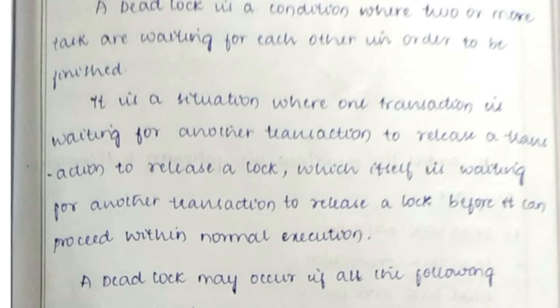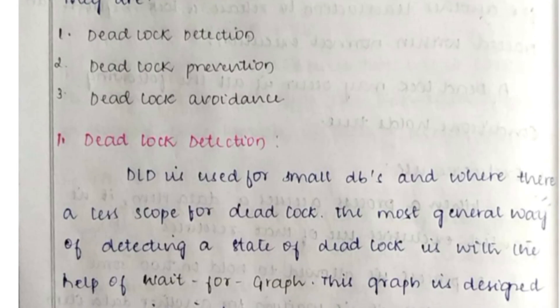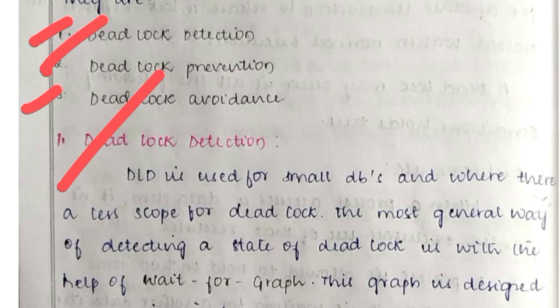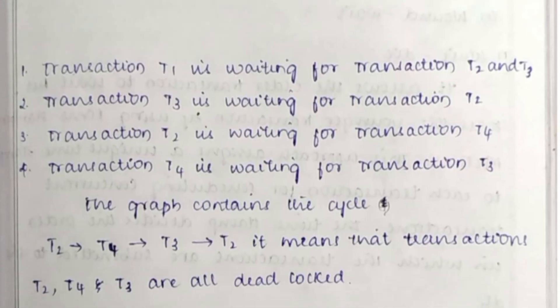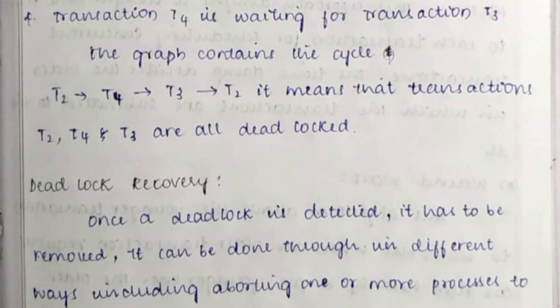The most important question is deadlock. A deadlock is a condition where two or more tasks are waiting for each other in order to be finished. The conditions involving deadlock include exclusive use and cyclical wait. There are three aspects: deadlock detection, deadlock prevention, and deadlock avoidance.